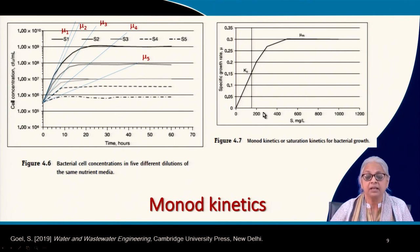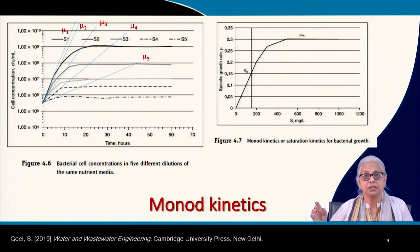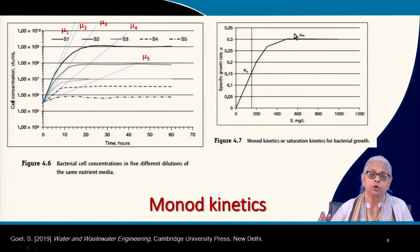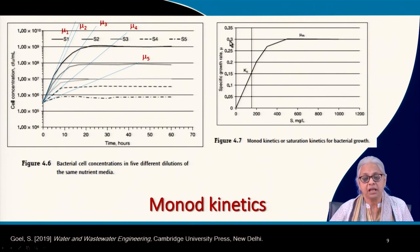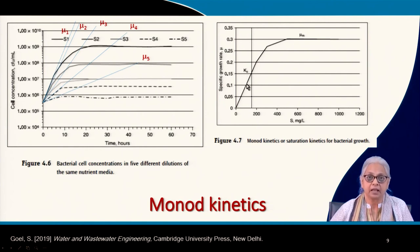We also define another parameter called Ks — the half-velocity constant — which is the substrate concentration at which the specific growth rate is exactly half of mu_max. So here, mu_max = 0.3, half of that is 0.15, and the corresponding substrate concentration is Ks (K subscript s).